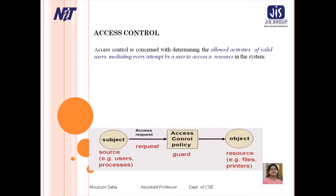Access control is concerned with determining the allowed activities of valid users and mediating every attempt by a user to access the system. Managing users with the principle of least privilege entails creating separate accounts for each user with just the privileges that user needs. An operator who needs to mount tapes and back up files on the system has access only to those commands and files needed to accomplish the job. Some systems implement role-based access to provide this functionality.